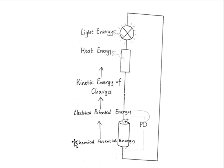A battery or cell stores chemical potential energy inside its chemicals. A chemical reaction inside the battery converts this chemical potential energy into electrical potential energy, causing one terminal to become positively charged and the other one negatively charged. This creates a potential difference across the battery.